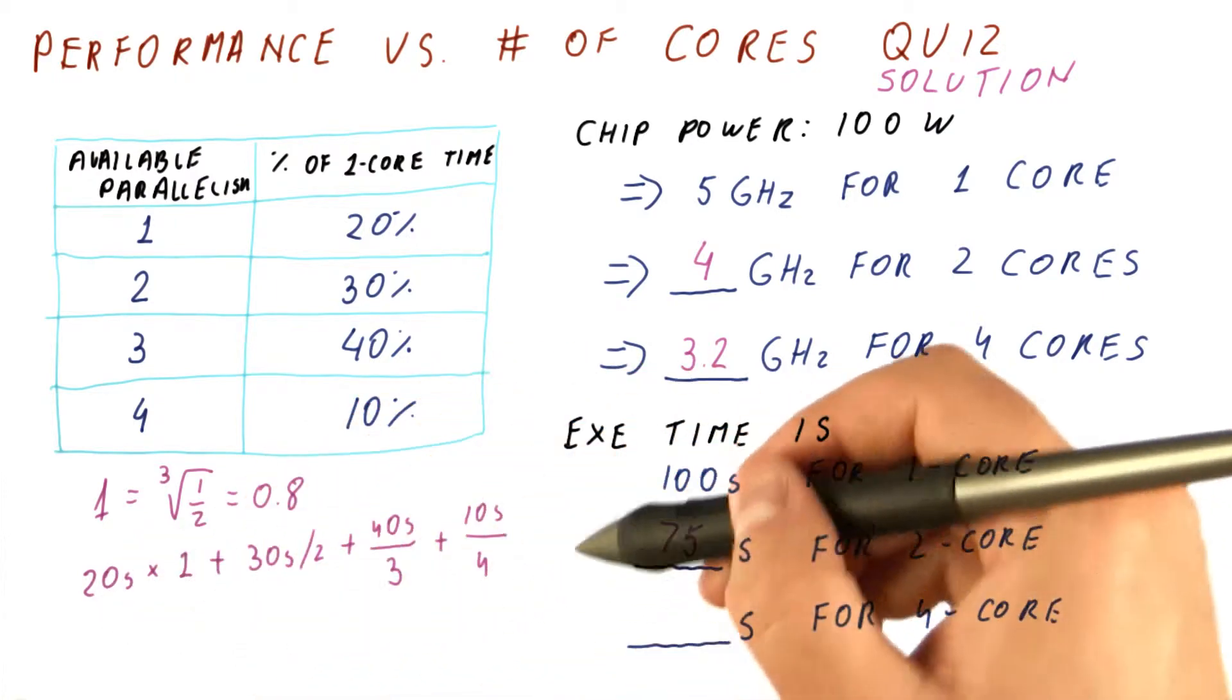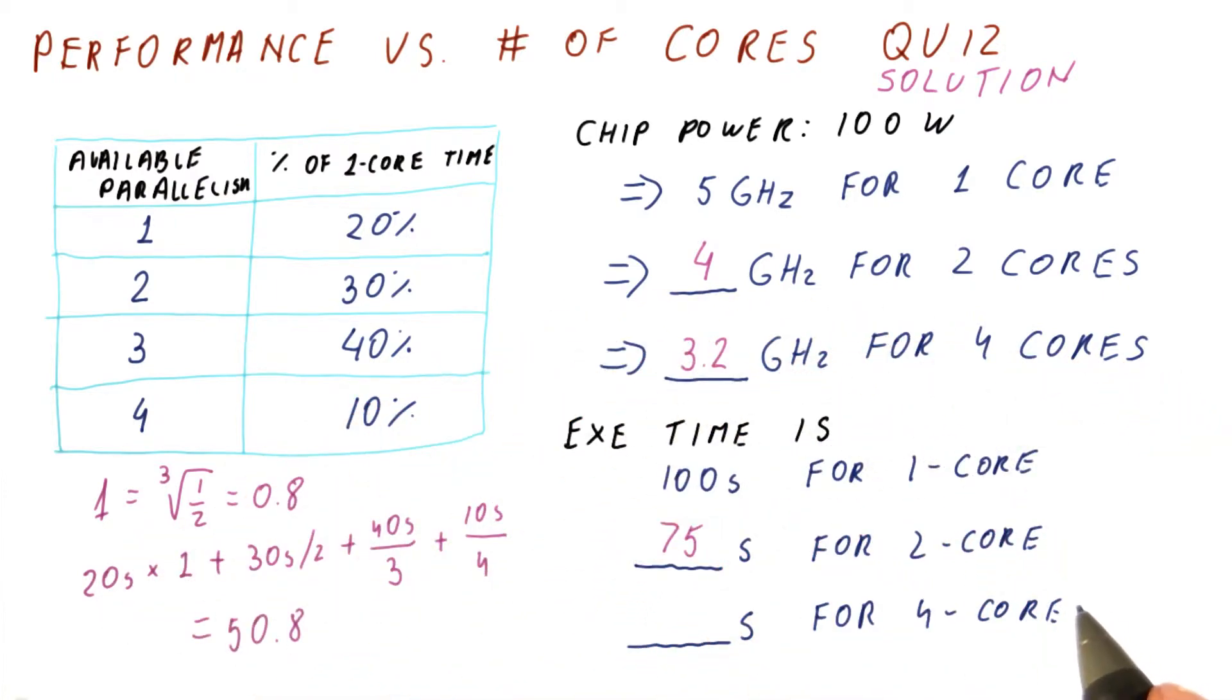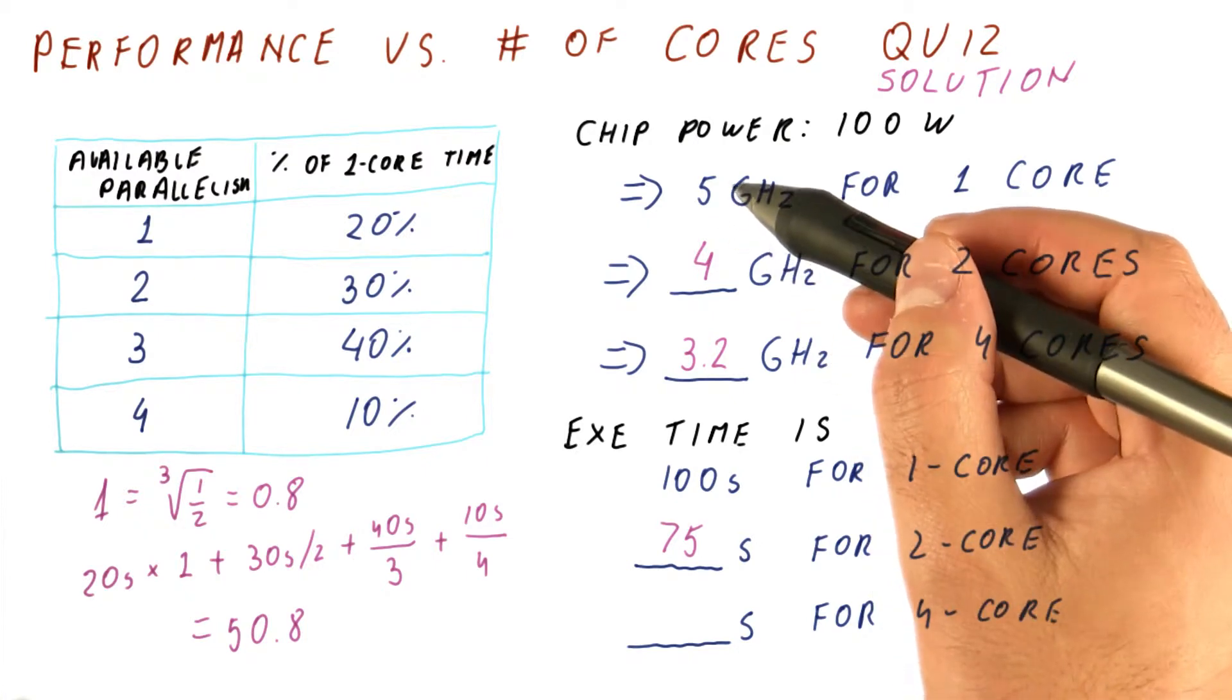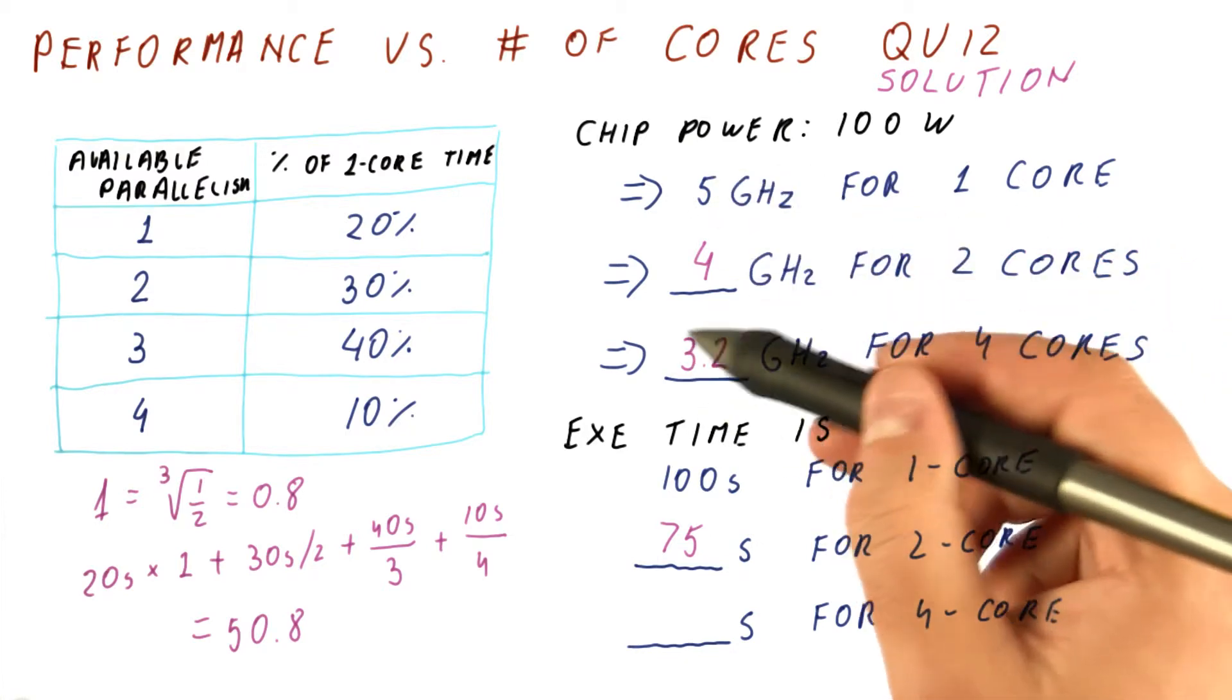Keep in mind that this is without the change in frequency. So what we get is 50.8 seconds. And now we have to account for the change in frequency from 5 gigahertz to 3.2 gigahertz.